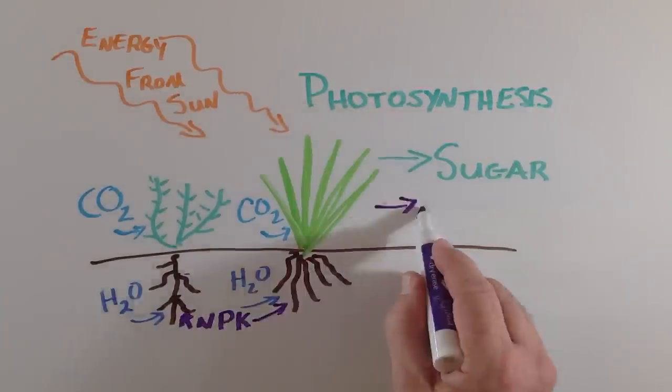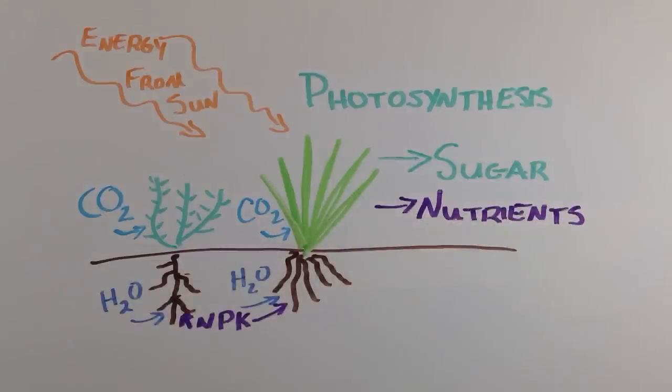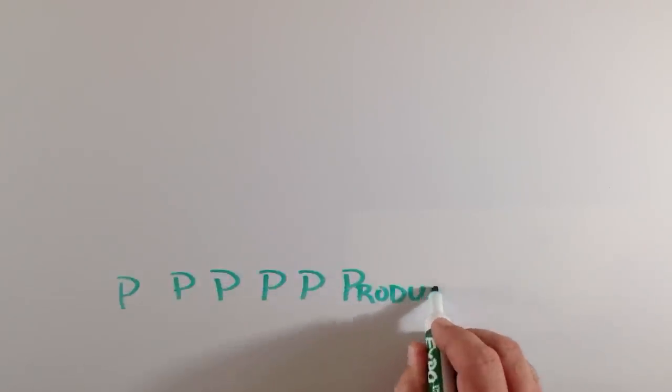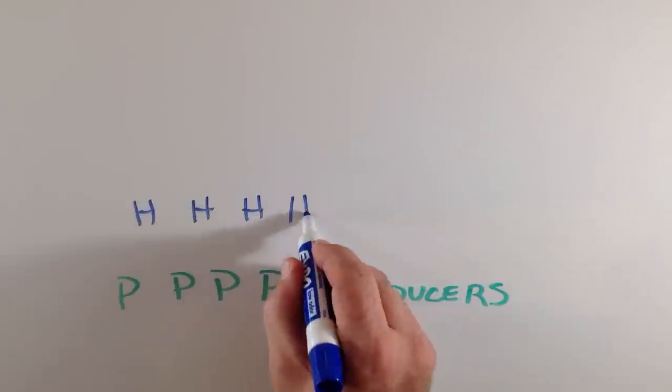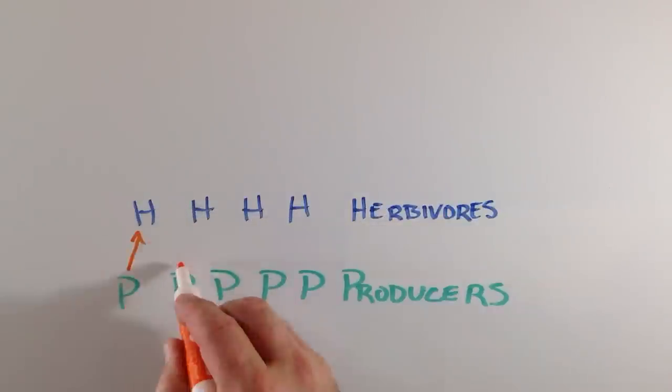Elements such as nitrogen, phosphorus, and potassium are also taken up from the soil and made into different nutrients that are found in the plant tissues. Because they harvest energy from the sun and synthesize soil nutrients into useful forms, plants are called producers.